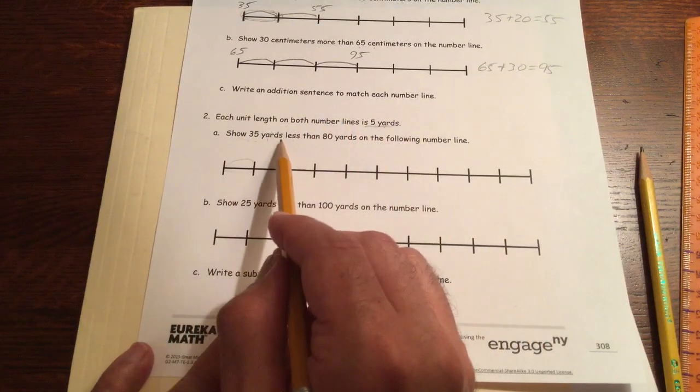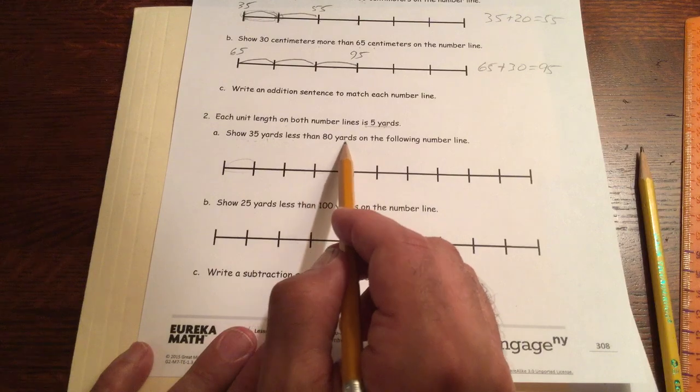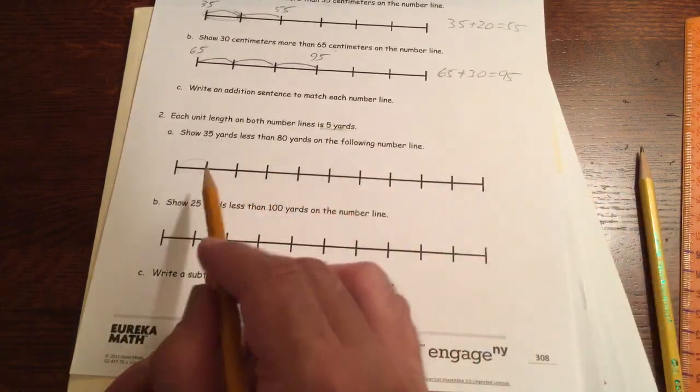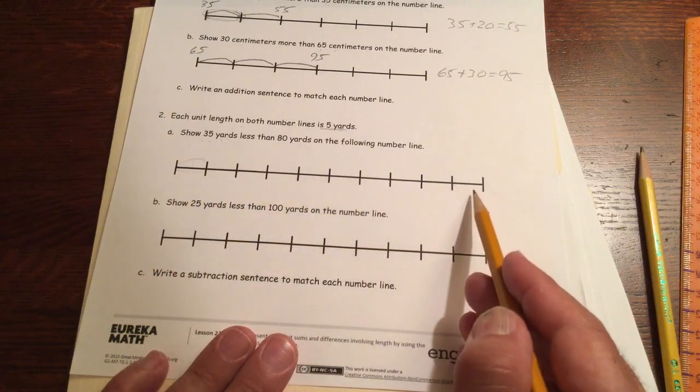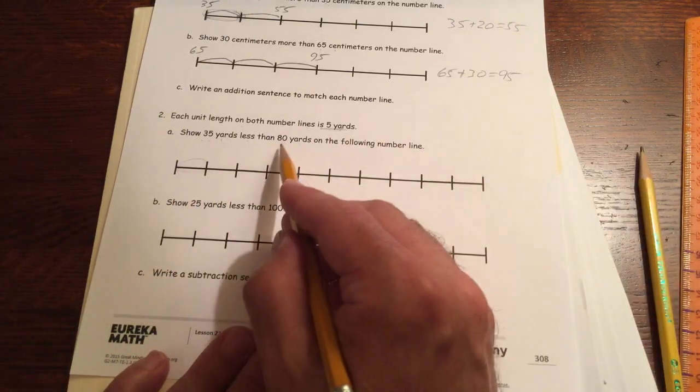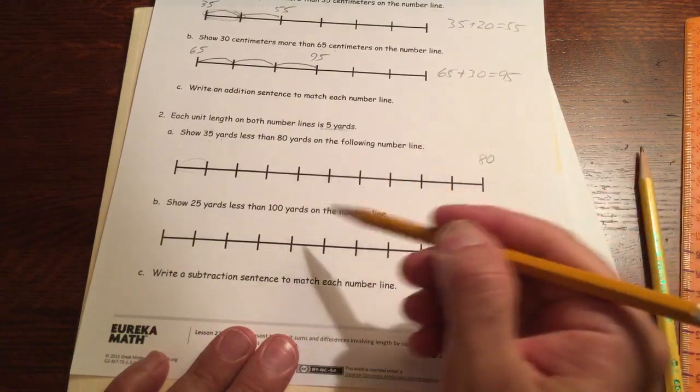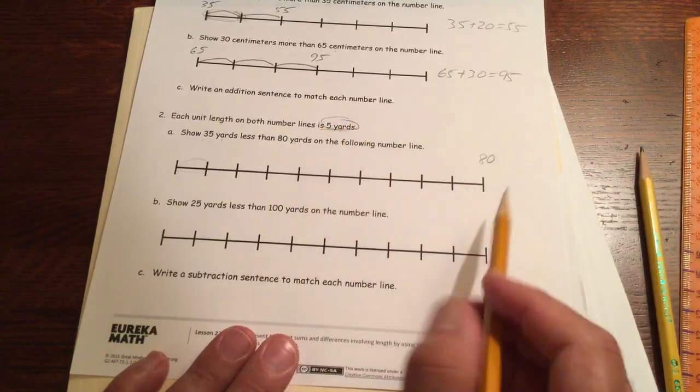Show 35 yards less than 80 yards, so we're counting backwards when we're talking about less. If we're going to count backwards, let's start at the other end and go back. Less than 80, which means we're going to start at 80 and go back 35, counting 5 at a time.